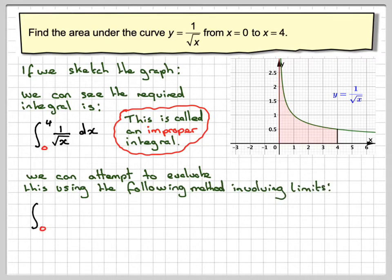So what we do is we say the integral from 0 to 4 of 1 over root x dx is going to be the limit as we invent a variable a goes to 0. And we replace the 0 now with an a, so it becomes the integral from a to 4 of 1 over root x dx.